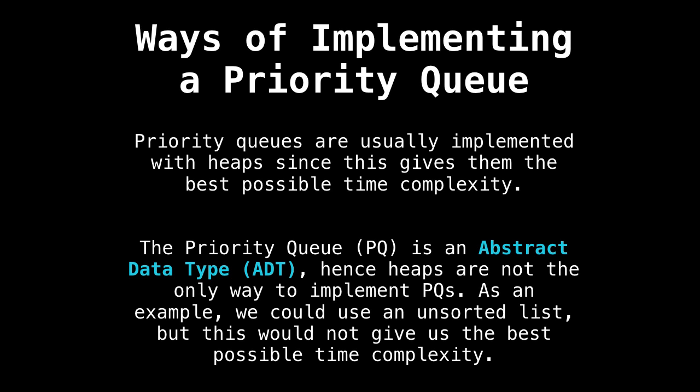A very popular way to implement a priority queue is to use some kind of heap. This is because heaps are the data structure which give us the best possible time complexity for the operations we need to perform with a priority queue. However, I want to make this clear, a priority queue is not a heap. A priority queue is an abstract data type that defines the behavior a priority queue should have.